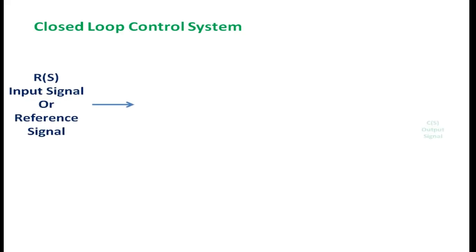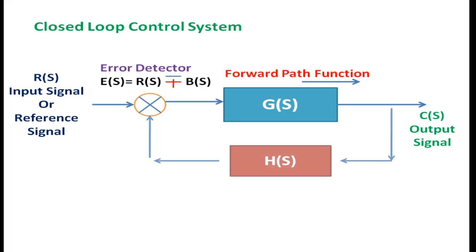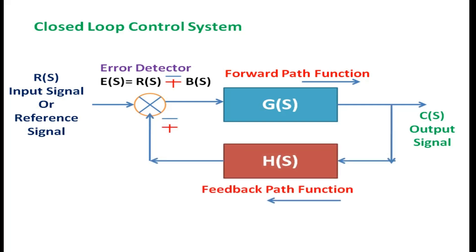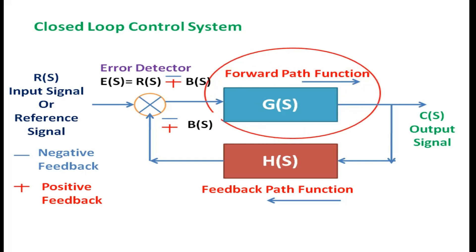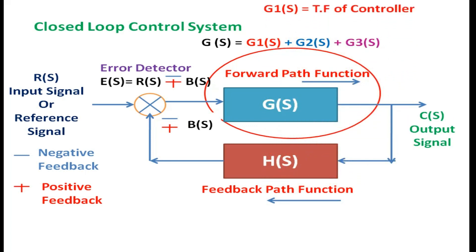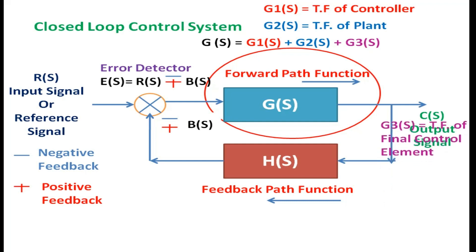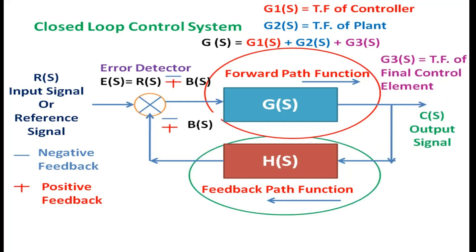Now we discuss the closed loop control system, which has input signal R(S), output signal C(S), error detector E(S) equal to R(S) plus or minus B(S), forward path function G(S), and feedback path function H(S). It can have negative or positive polarity — negative indicates negative feedback and positive indicates positive feedback. The forward path function is a combination of other functions: G(S) = G1(S) + G2(S) + G3(S).